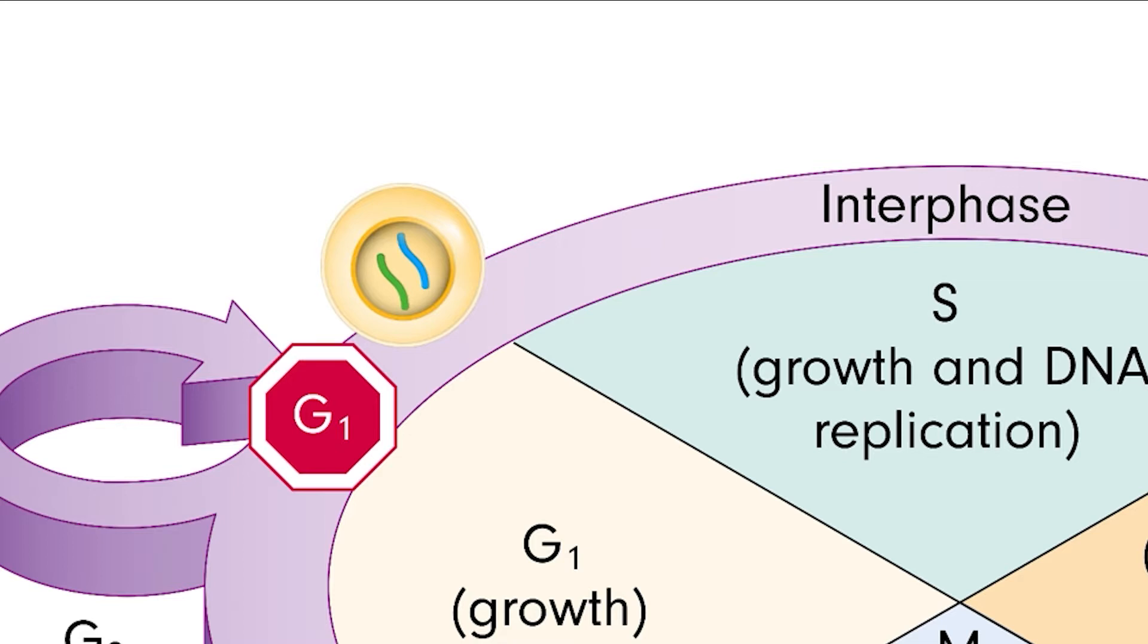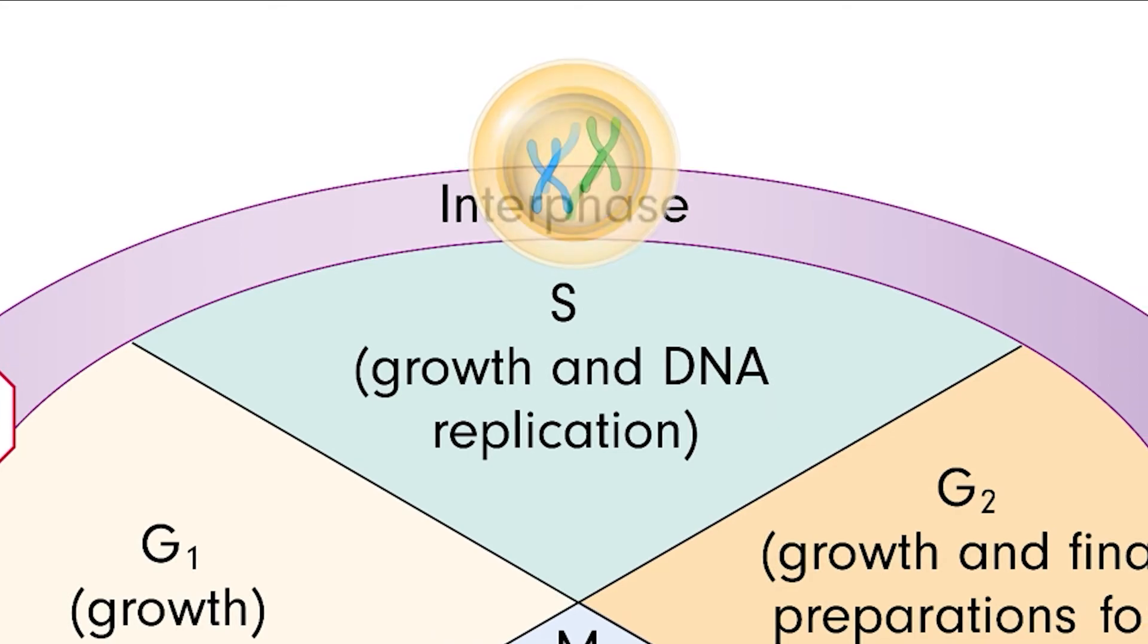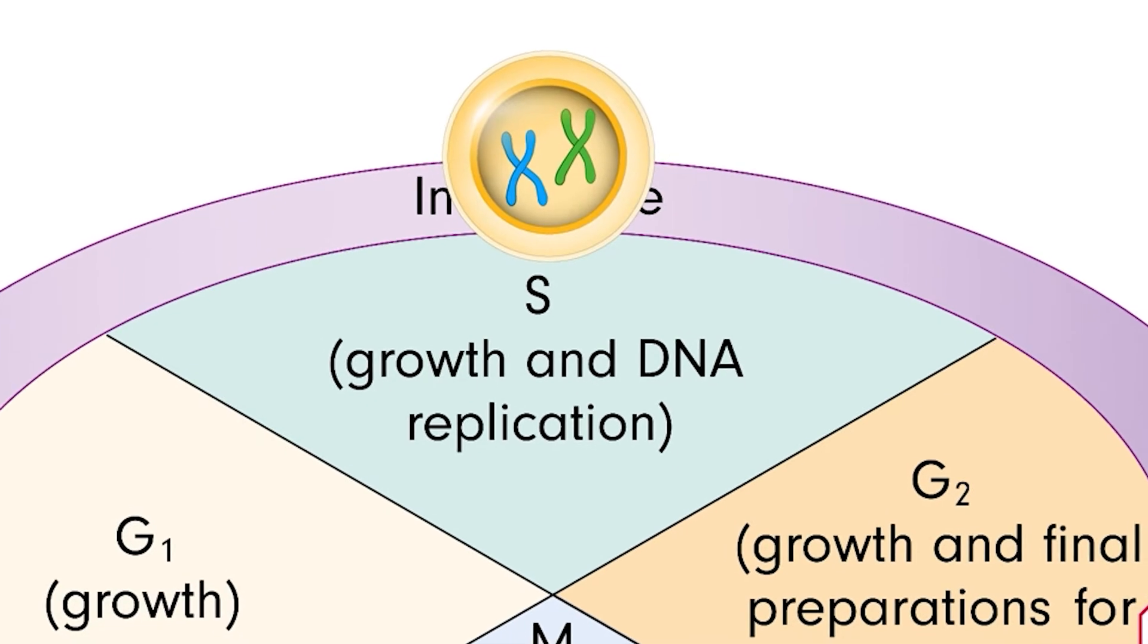After the cell has reached a certain size and has amassed enough nutrients, the cell will enter the S or synthesis phase. During this phase, a new strand of DNA is synthesized via the enzyme DNA polymerase and the process of DNA replication.